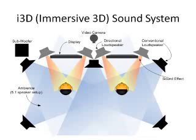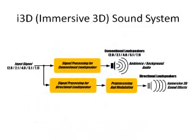Conventional multi-channel audio systems provide a 3D effect to the audio presented to the listener, but the listener does not feel the closeness of the audio effects and hence the sound experience tends to be less engaging. The immersive 3D sound system, or i3D, augments the audio experience provided by conventional multi-channel audio systems. The i3D sound system uses directional audio beam systems together with conventional loudspeakers, thereby bringing the audio effects closer to the user and providing a new immersive sound experience. The i3D system channels sound ambience to the conventional loudspeakers and sound effects to the directional audio beam system.